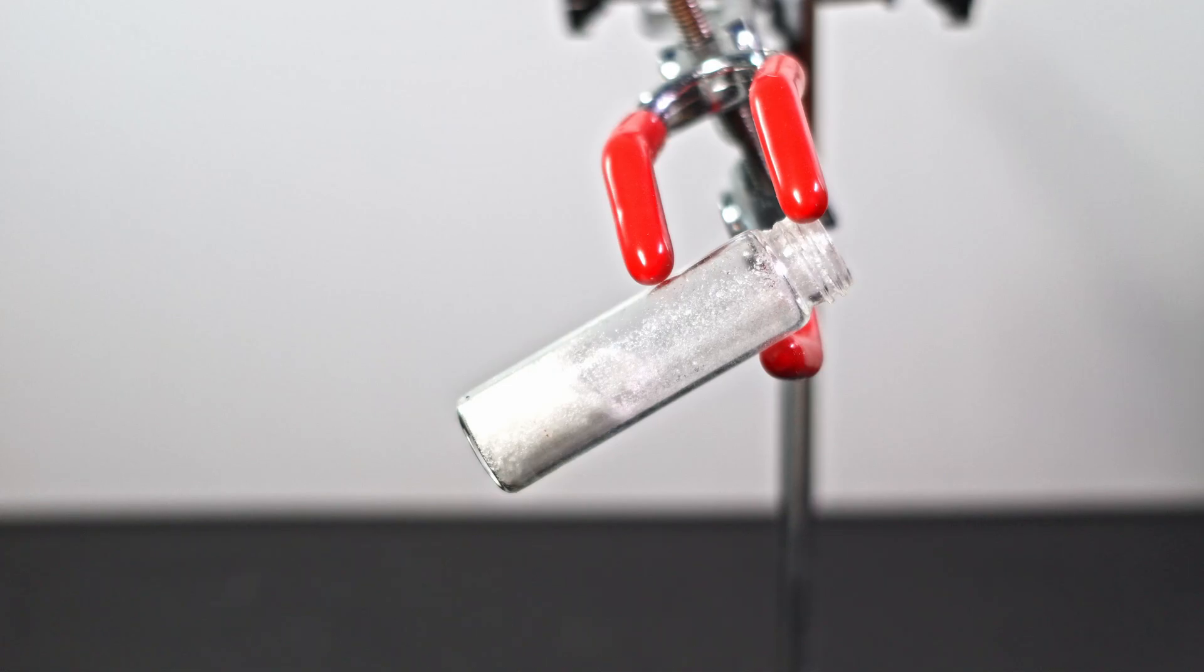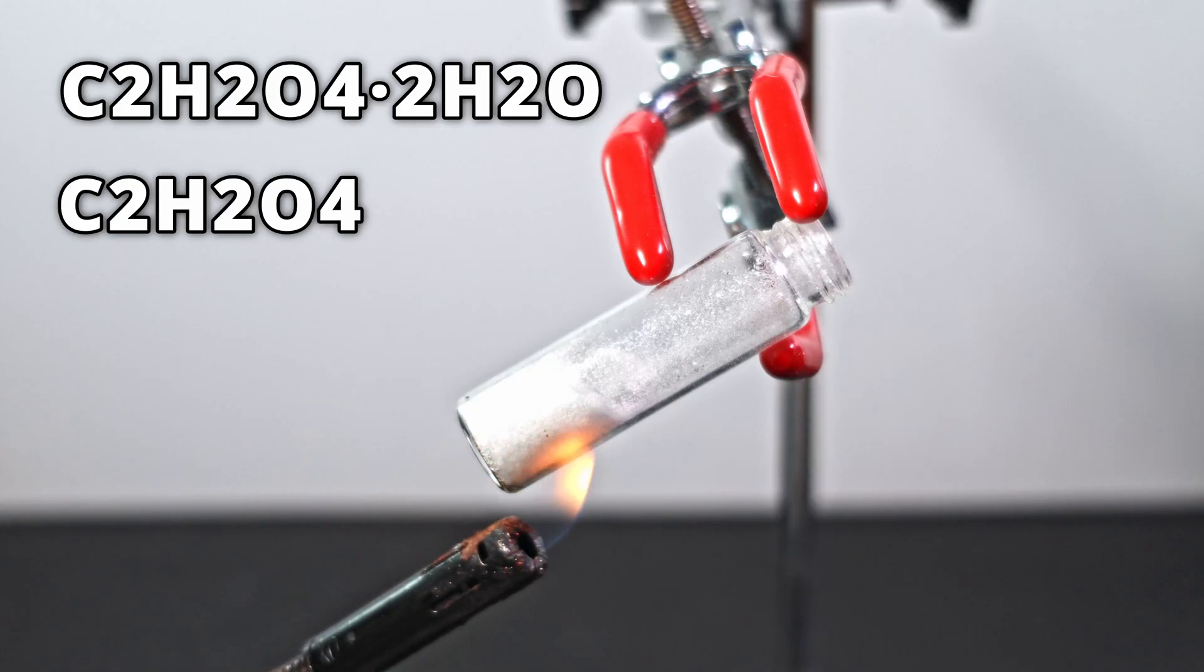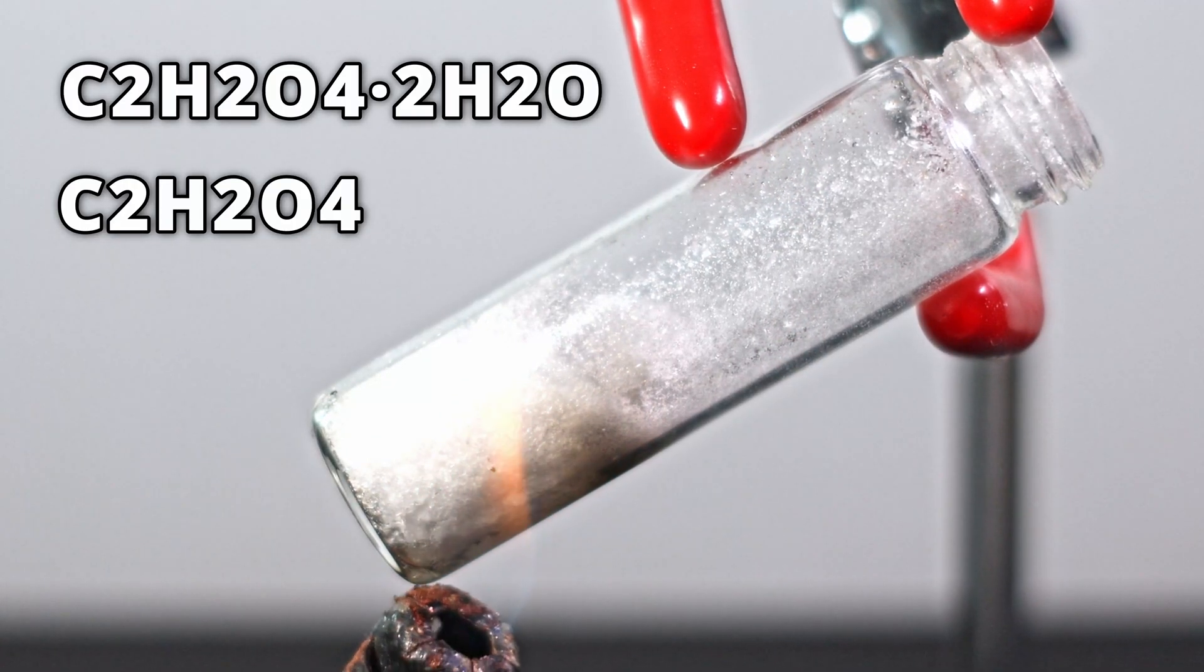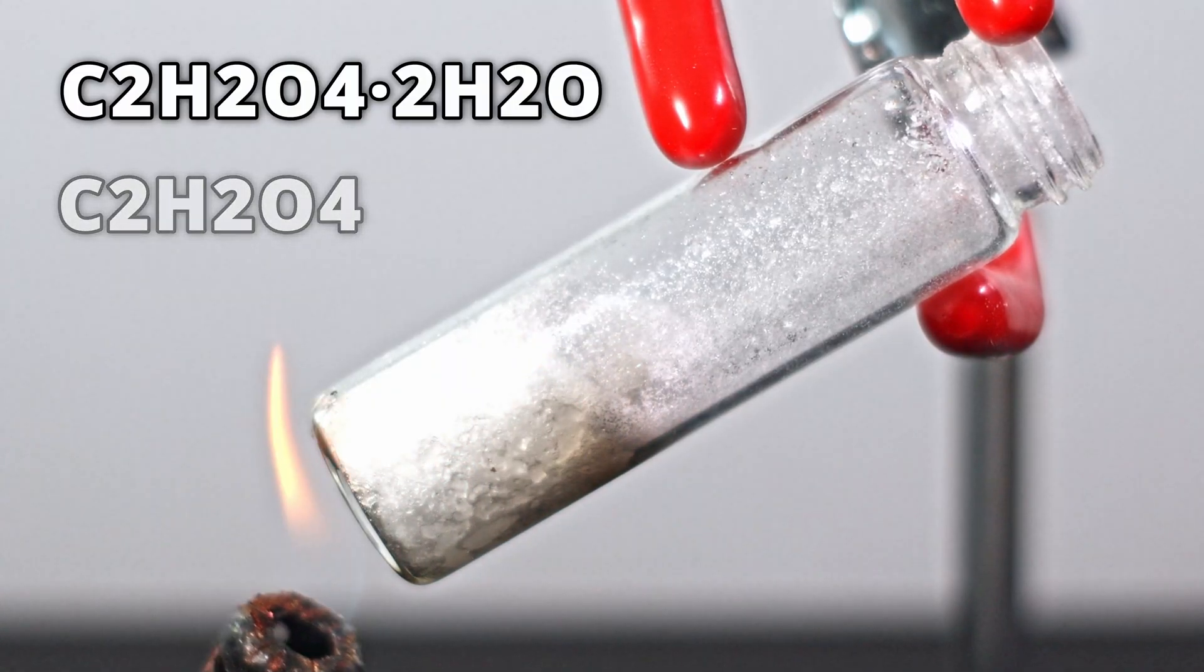The first thing we need to do is determine whether we have the dihydrate or anhydrous form. A simple way to test is to apply strong heating. The oxalic acid soon begins to melt and exude water, crystal clear evidence that we have the dihydrate.